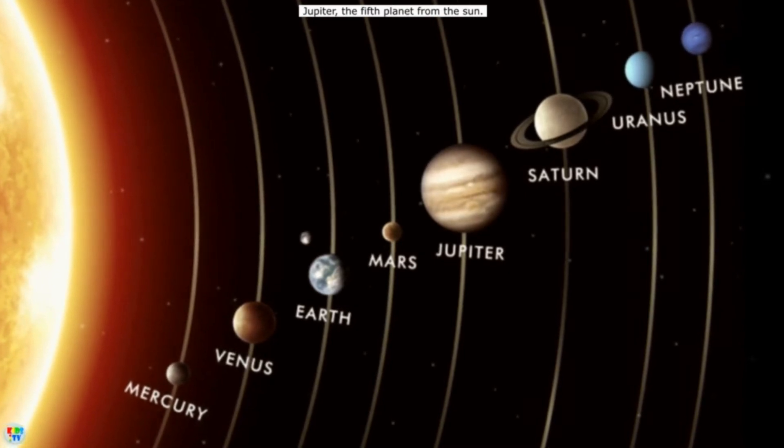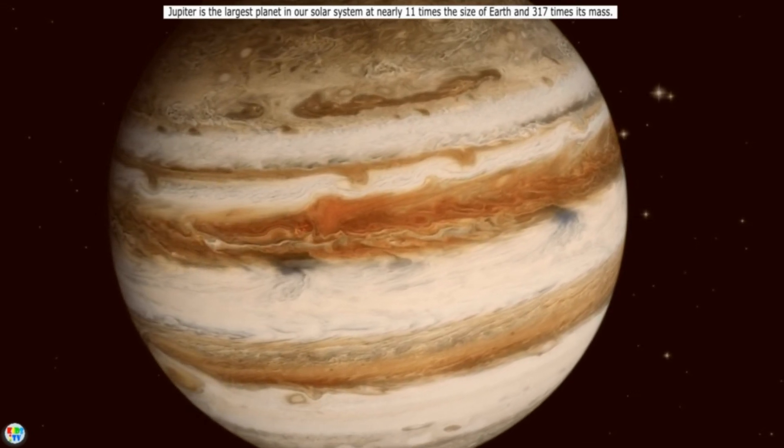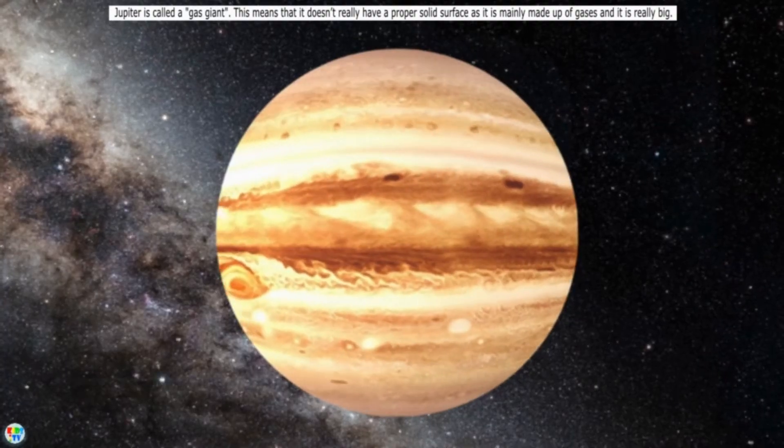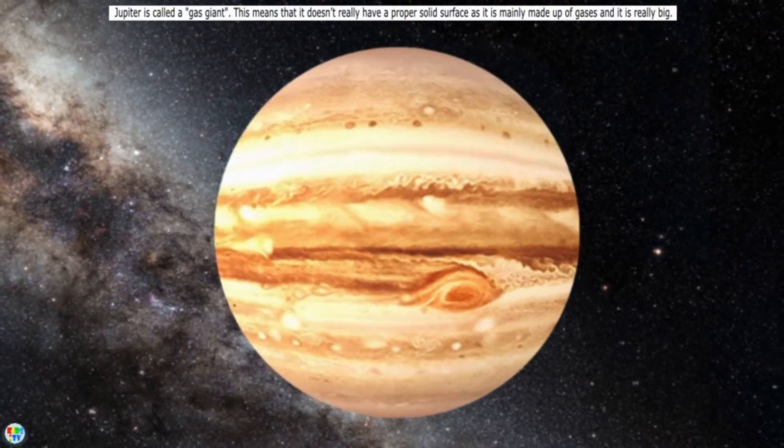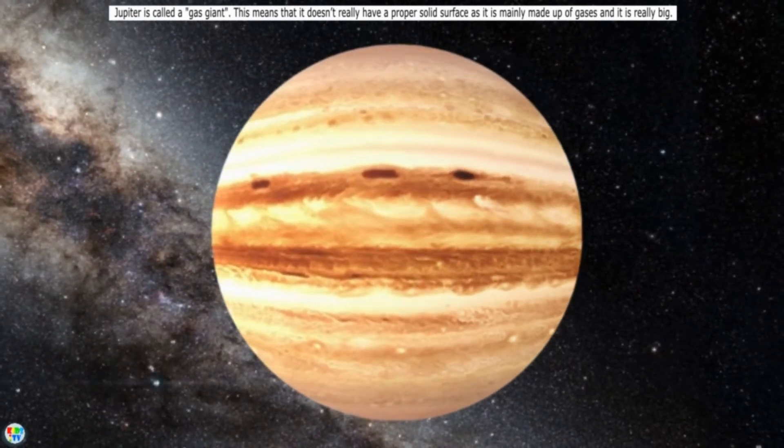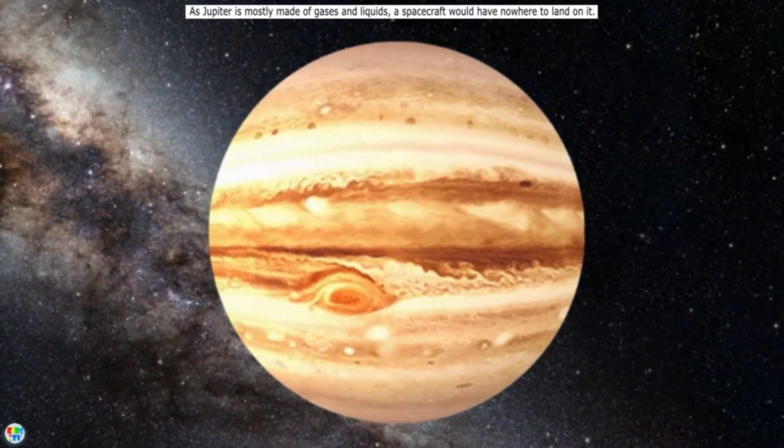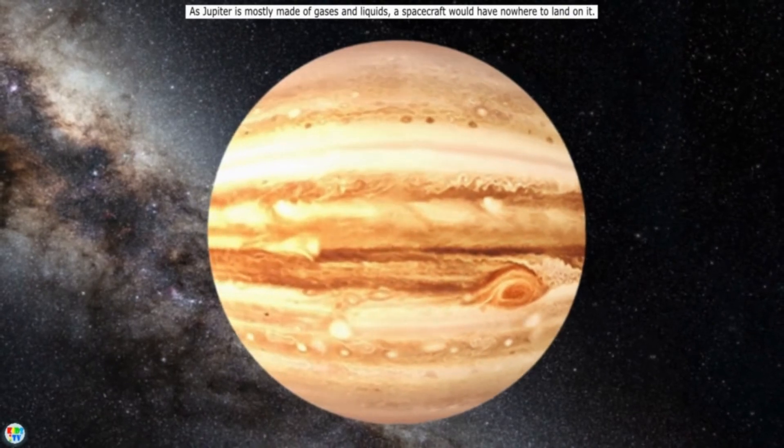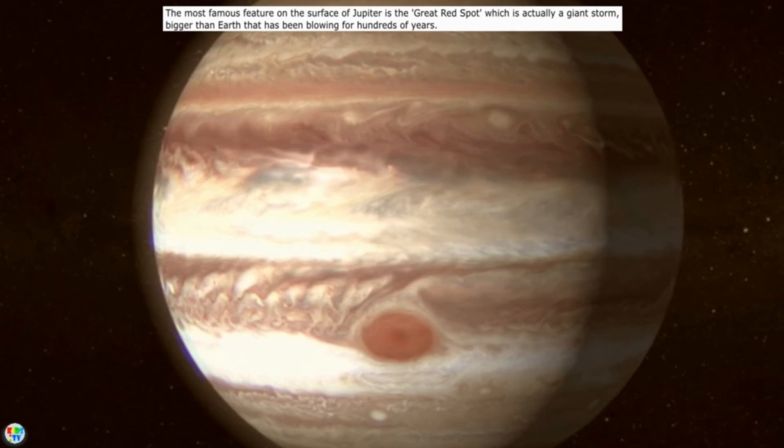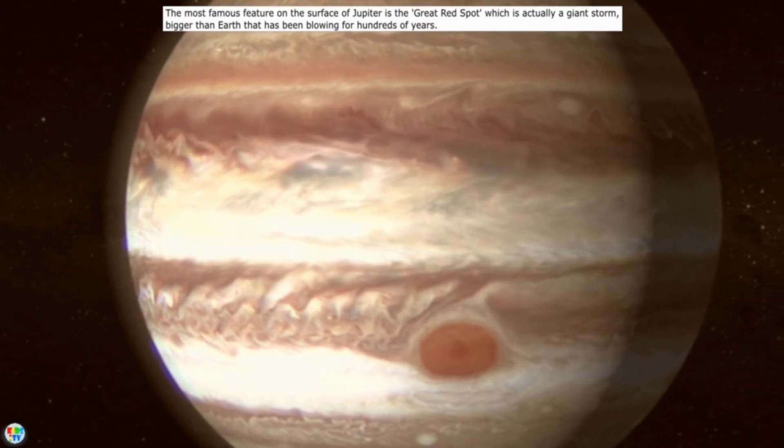Jupiter, the fifth planet from the Sun. Jupiter is the largest planet in our solar system at nearly 11 times the size of Earth and 317 times its mass. Jupiter is called a gas giant, which means that it doesn't really have a proper solid surface as it is mainly made up of gases and it is really big. As Jupiter is mostly made of gases and liquids, a spacecraft would have nowhere to land on it. The most famous feature on the surface of Jupiter is the great red spot, which is actually a giant storm bigger than Earth that has been blowing for hundreds of years.